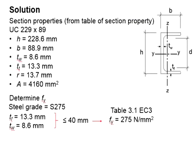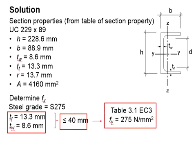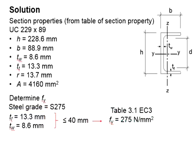Next, you determine the FY. It is found that the thickness of the flange and the thickness of the web equals 13.3 and 8.6mm, which is less than 40mm. According to table 3.1 in Eurocode, the FY should equal 275.